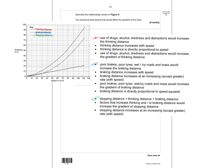For thinking distance: factors such as use of drugs, alcohol, tiredness, or distraction increase thinking distance and steepen its gradient. Thinking distance increases with speed and is directly proportional to speed — because you're travelling at constant speed before braking, so it's a linear relationship.